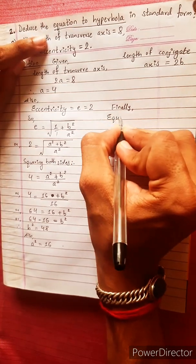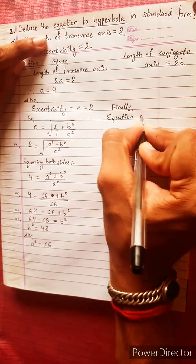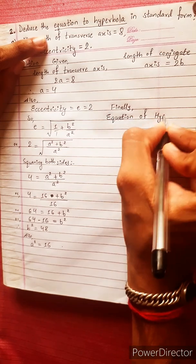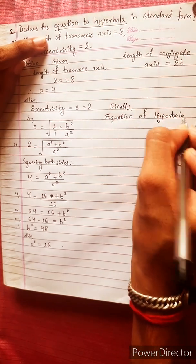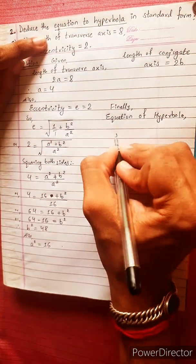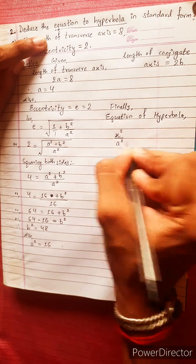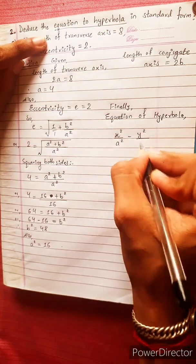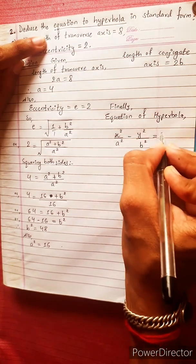Finally, equation of hyperbola. The equation of hyperbola is given by x squared by a squared minus y squared by b squared equals to 1.